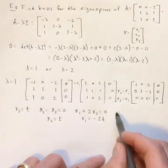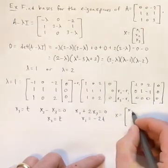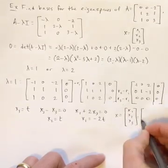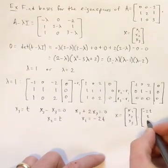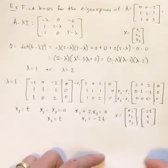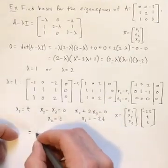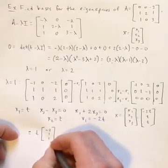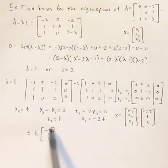So the solution for the eigenvalues, which I'm calling x1, x2, x3, x1 is negative 2t, x2 is t, and x3 is t. And if we factor out the t there, we get t times the vector negative 2, 1, 1.